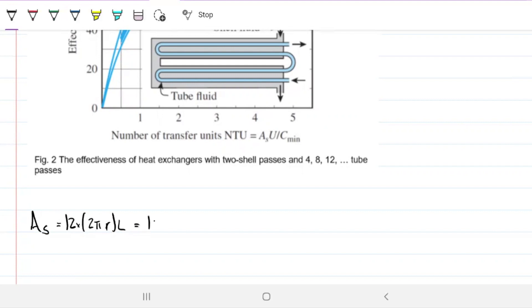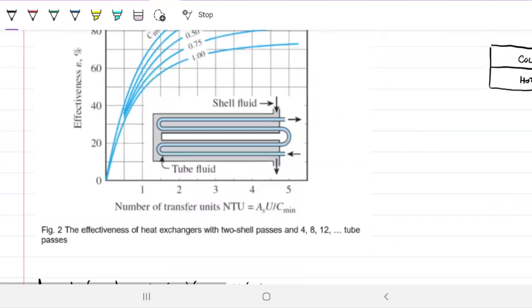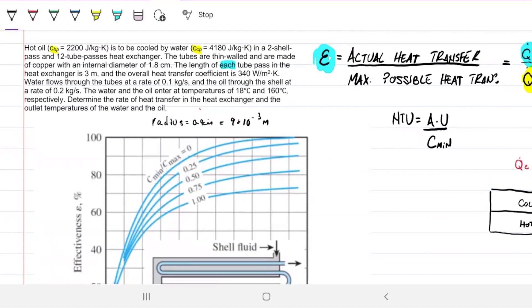So that will be 12 times 2π times 9 times 10 to the minus 3 times 3 meters, which is approximately 2 meters squared. The overall heat transfer coefficient, so is this H or is it U? U.